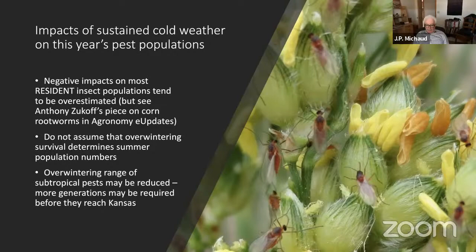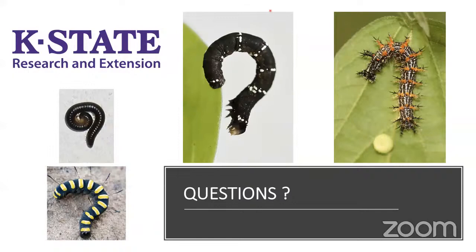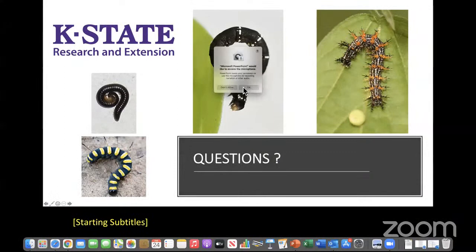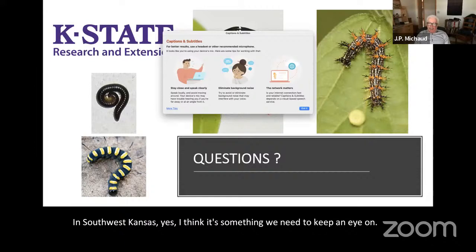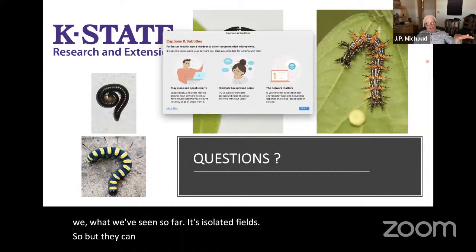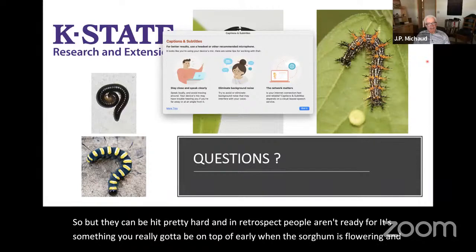A question: do we need to be more concerned with midge in southwest Kansas? Yes, I think it's something we need to keep an eye on. How bad it's going to be and how widespread, I don't know. What we've seen so far is isolated fields, but they can be hit pretty hard. In retrospect, people aren't ready for it. It's something you really have to be on top of early — when the sorghum is flowering, find it early and treat it early, because once those larvae are inside the capsules there's nothing you can do. It's going to be a difficult one if it becomes more prevalent.